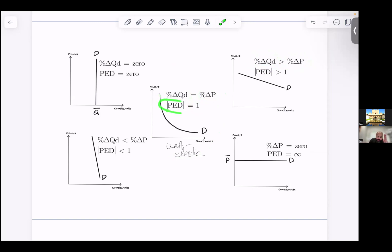If the percentage change in quantity demanded is less than the percentage change in price, we say that demand is price inelastic. That means quantity demanded or demand is not very sensitive to changes in price, and the demand curve will be relatively steep.